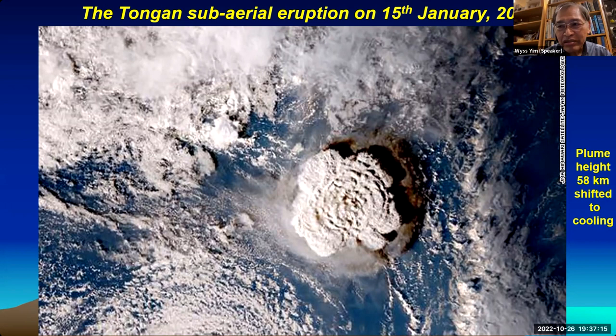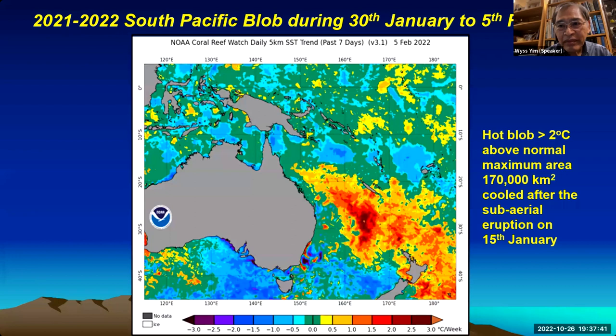This satellite image shows the January 15th 2022 Tonga eruption — a very large eruption penetrating the mesosphere at an elevation of 58 kilometers. This shifted conditions in the region to cooling because of heavy rainfall. The South Pacific blob measured during a seven-day period was only two degrees Celsius above normal, with a maximum area of 170,000 square kilometers. This cooled after the sub-aerial eruption on January 15th.